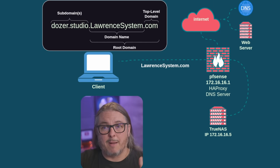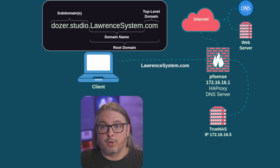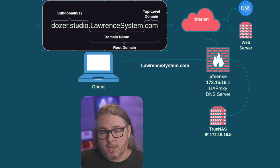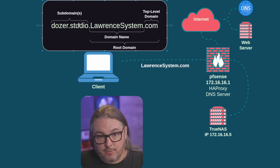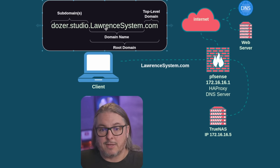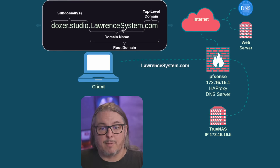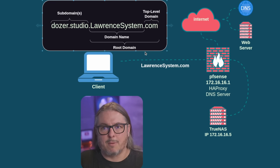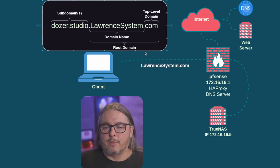Let's start by walking through the process a system goes through and where you do or don't need an entry, and what a fully qualified domain name, root domain, or top-level domain is. Here are our subdomains — we have dozer.studio, the extended subdomains of lawrencesystem.com, which is the domain name, and the top-level domain is .com. If you're thinking there's an S missing, either lawrencesystem or lawrencesystems with an S both go to my website — there's a redirect that sends you to the right place.